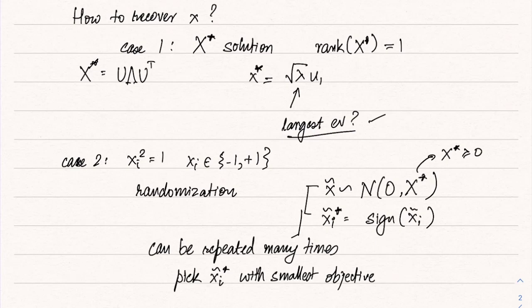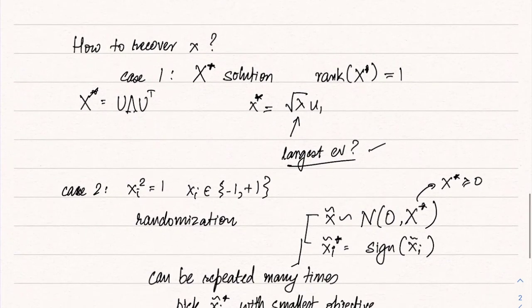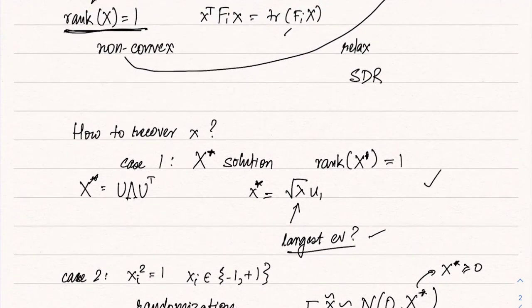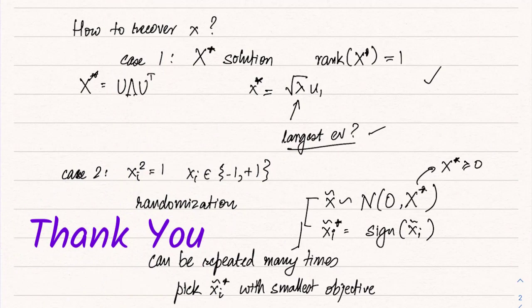This way we obtain a good approximation to the original problem: each x_i is ±1 and the objective is small. This randomization is heuristic, but in certain scenarios it has been shown to give near-optimal solutions. There are also scenarios where SDR is exact — not just a relaxation but an exact solver for the non-convex QCQP — because there is some hidden convexity that SDR brings out. These are the two popular cases in semi-definite relaxation.